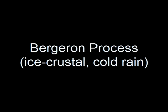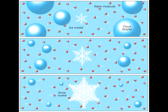This process explains much of the precipitation that we experience in the mid-latitudes. The basic idea is that in the midsection of the cloud, in the presence of ice crystals, liquid water, and water vapor, ice crystals will grow rapidly at the expense of water droplets.